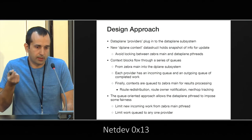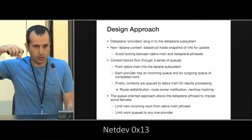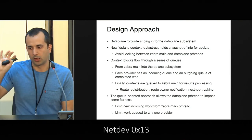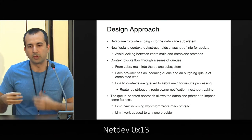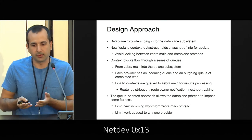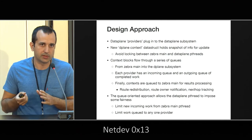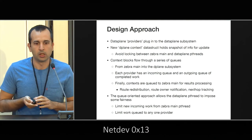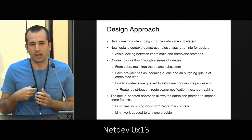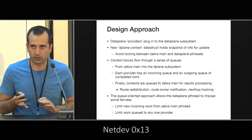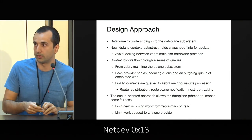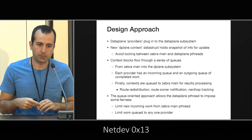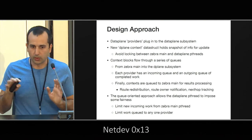The design approach was to have a 'provider' concept. A provider is an abstraction representing whoever takes care of a data plane. So you would have the kernel provider, which is what's actually in charge of pushing routes through netlink to the kernel. But you can also have a custom provider for your own physical box, which you develop yourself but which registers with the API introduced by this framework.